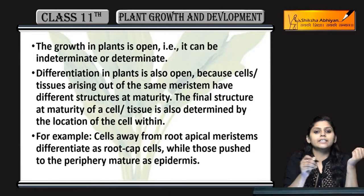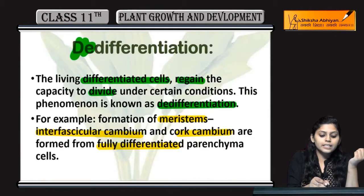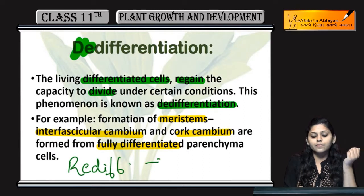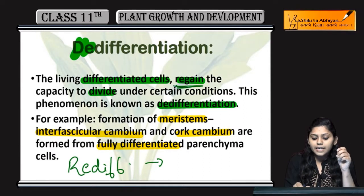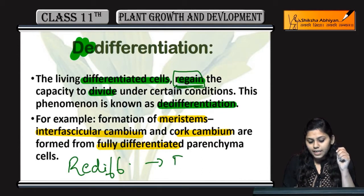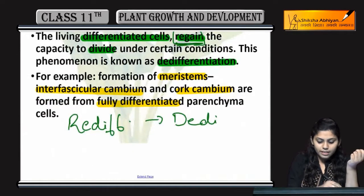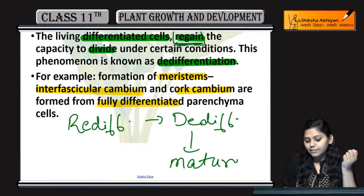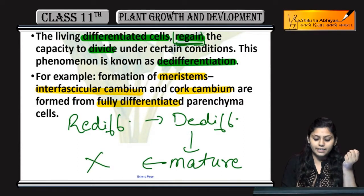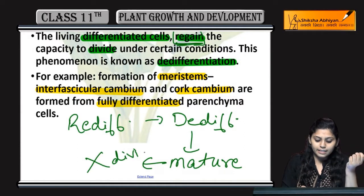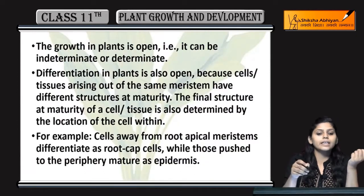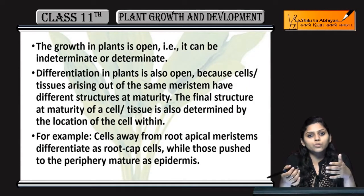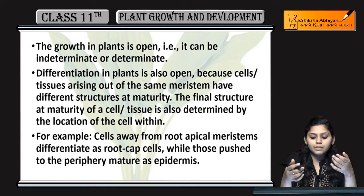Similarly, there is the term re-differentiation. In re-differentiation, the cells that had regained the capacity to divide — that is, the de-differentiated cells — once again become mature, and the property of division is lost. They can no longer divide. This process is called re-differentiation.